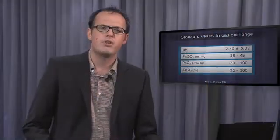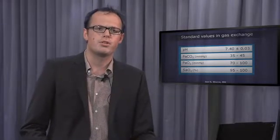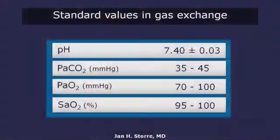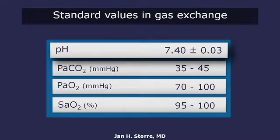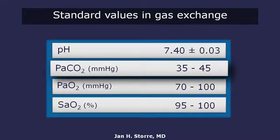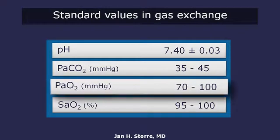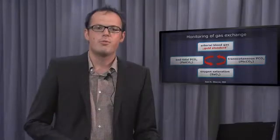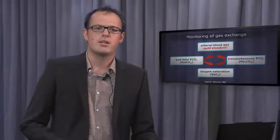To get an idea of the diagnostic, it is very important to know normal or standard values from the arterial blood gas. The pH is normally around 7.40 and the partial pressure of carbon dioxide is around 40 mmHg. Regarding the oxygen, the partial pressure of oxygen is above 70 mmHg depending on the age of the patient, and the saturation of oxygen in the blood should be above 95%.